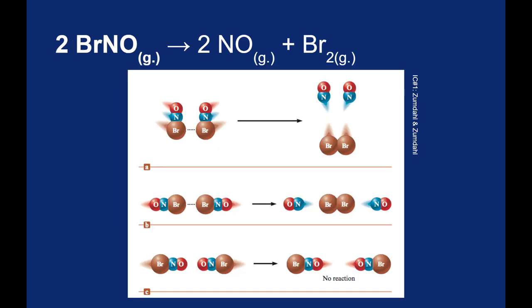This is the BrNO molecule decomposing into NO and Br2. We bring two of the BrNO molecules together, and depending on how they collide, it is easier to form the bonds of the products. So if the bromine and bromine come together, then they can bond to each other and liberate the NO molecules.